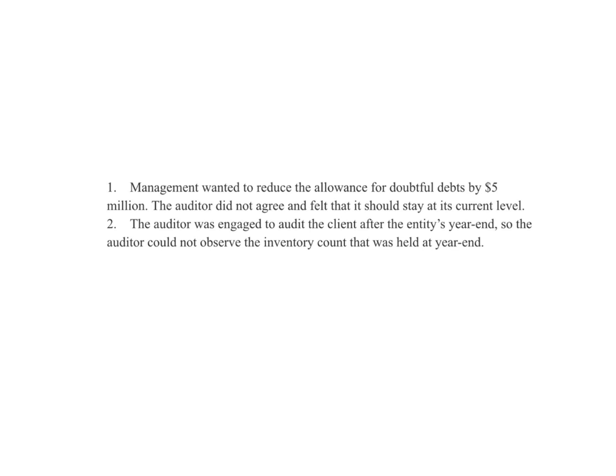Scenario 1: management wanted to reduce the allowance for doubtful debts by $5 million. The auditor did not agree and felt it should stay at its current level. Clearly we have a disagreement with management. It's definitely material — you can assume these are always material — but the key is whether it would also be pervasive. For one account, I would not go with pervasive, so our audit opinion is going to be qualified.